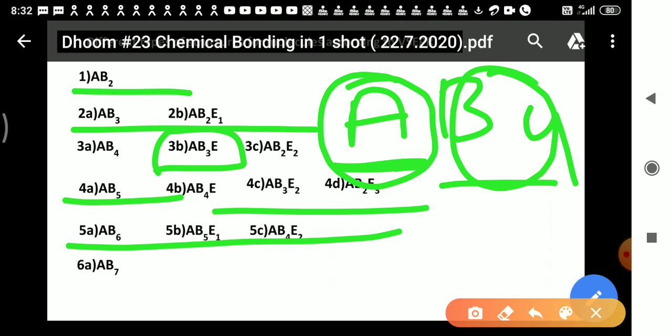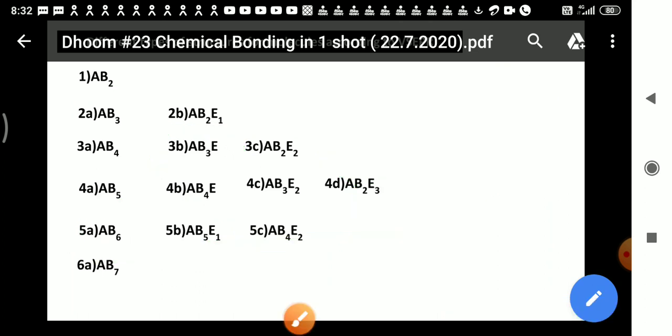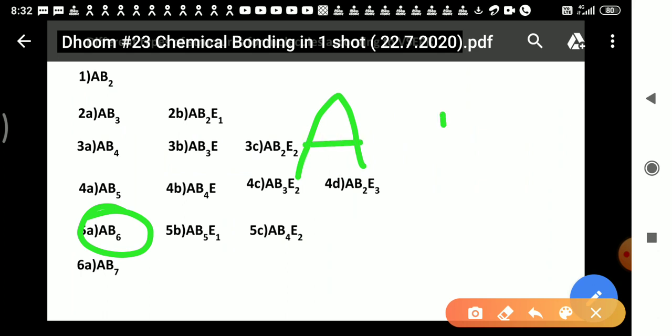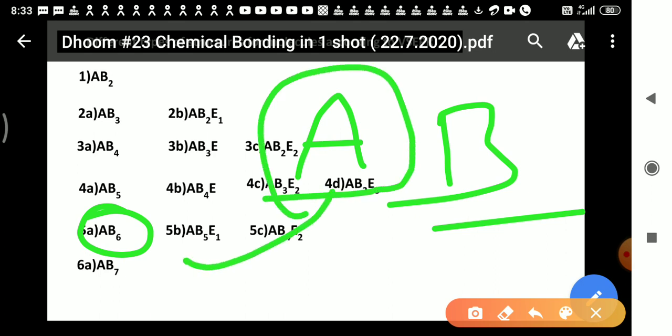Let me give you one general short example. For this molecule AB6, see that the element in lesser amount is A, and the element in greater amount is B. So A behaves as a central atom and B will behave as a surrounding atom.